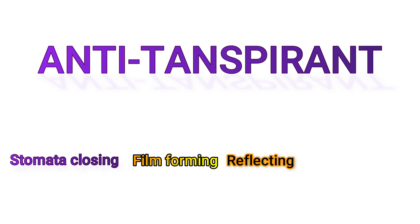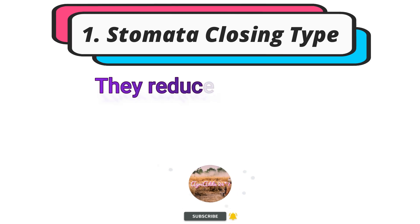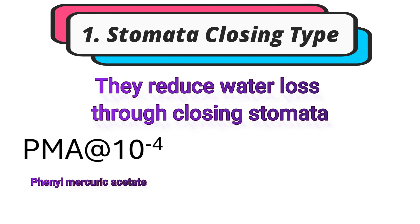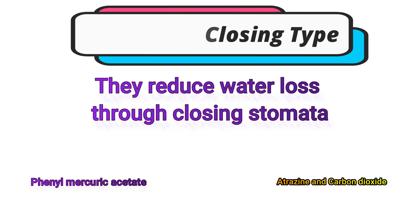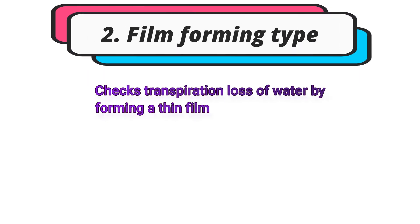First, let us discuss about the stomata closing type. These reduce water loss by closing stomata. The examples are phenyl mercuric acetate (PMA) at the rate of 10⁻⁴, atrazine, and carbon dioxide, which are also effective antitranspirants. Second, the film forming type checks transpiration loss of water due to the formation of a thin film which acts as a physical barrier.